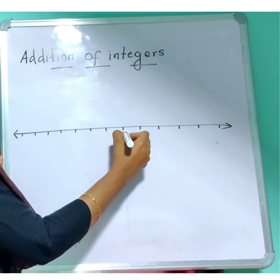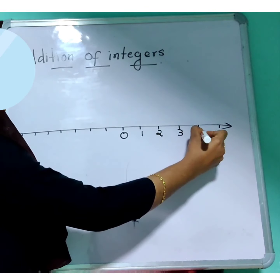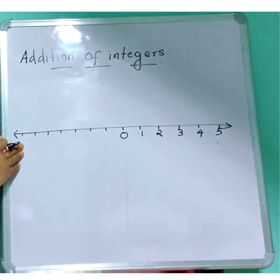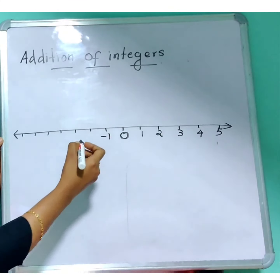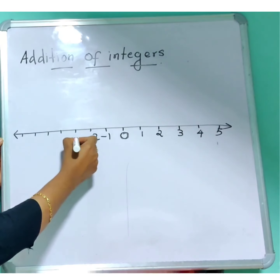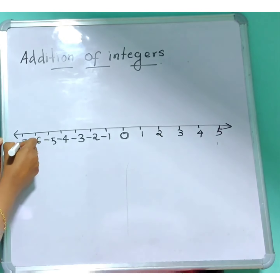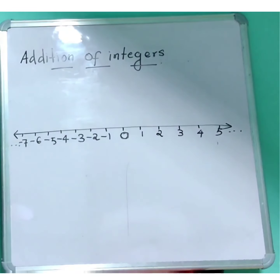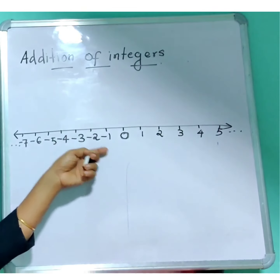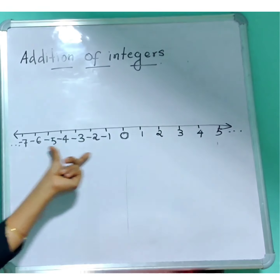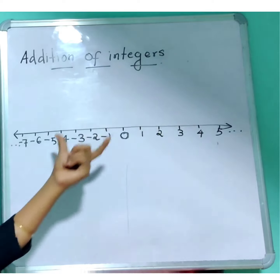This is a number line. We represent the center as 0. To the right side there will be 1, 2, 3, 4, 5, and so on. And to the left side, near to 0, there will be minus 1, minus 2, minus 3, minus 4, minus 5, and so on. So the number line consists of 0, with positive integers to the right and negative integers to the left.